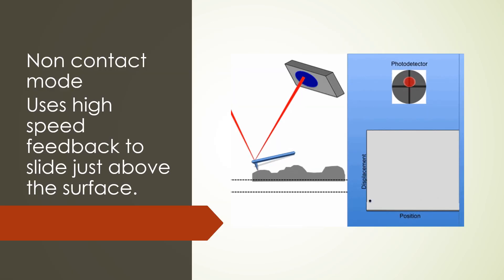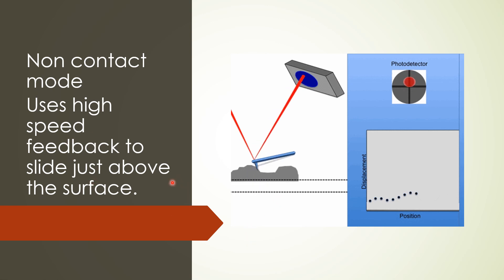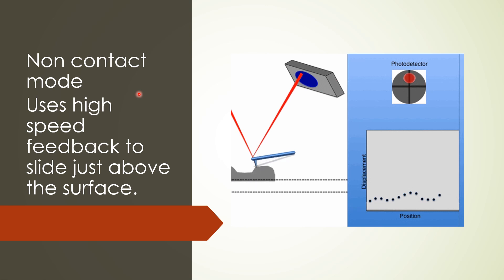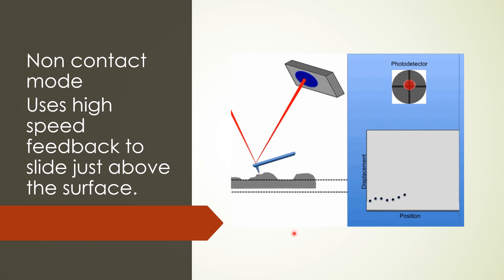Both non-contact mode and contact mode have a feedback loop; however, the mechanisms involved are different. In non-contact mode, the feedback loop has higher speed than the scanning speed, and it tries to maintain a particular oscillation amplitude of the cantilever tip. In contact mode, the feedback loop tries to maintain a particular amount of force on the sample, and the scanning speed is lower. Non-contact mode therefore has a more complex feedback circuit than contact mode. The diagram shows non-contact mode, where the cantilever has a particular oscillation frequency as it scans the sample.